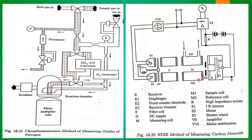In summary, the NDIR method uses infrared rays that absorb CO at its characteristic wavelength to measure the amount of carbon monoxide within exhaust gases.